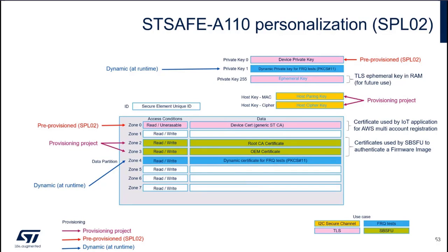In zones 2 and 3 you can see the SBSFU certificates. These you can read and write because you need to inject them with the provisioning project. Finally, in zone 4 you can use it for dynamic certificates, again in the context of the Amazon certification test. The pre-provisioning in the secure factory stores your device certificate and device private key, while the provisioning project injects the SBSFU certificates on top of that.